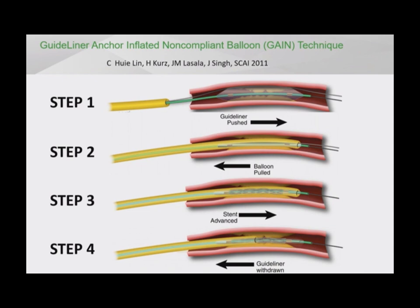So we had to be more aggressive with the GuideLiner. We adopted the technique called GAIN — GuideLiner Anchor Inflated Non-Compliant Balloon — described by Singh and colleagues in 2011, where the guide liner is advanced over a balloon and then the balloon is withdrawn and the stent is advanced. We had a small modification: we advanced the guide liner over the stent that was just in the mid-RCA, and once the guide liner reached a more advanced position in the mid-RCA, we were able to overcome the resistance offered by the calcified lesion and delivered the stent.